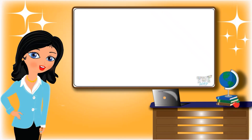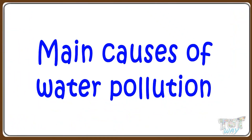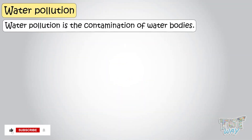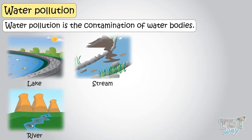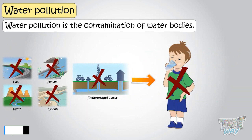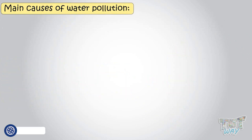Hi kids! Today we will learn the main causes of water pollution. Water pollution is a contamination of water bodies like lakes, rivers, streams, oceans, and even the underground water. This pollution makes the water in water bodies unsafe for use. About 11% of people on earth don't have access to safe drinking water. Now we will learn what are the main causes of water pollution.